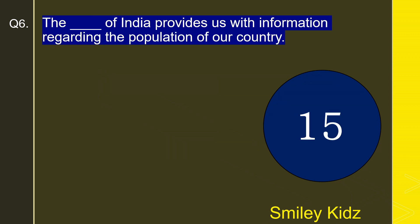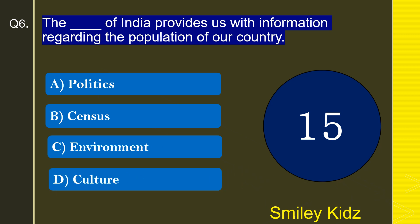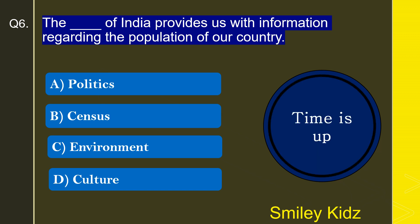Moving to question number 6: The what of India provides us with information regarding the population of our country? Options are politics, census, environment, or culture. The correct answer is census. The census of India provides us with information regarding the population of our country.